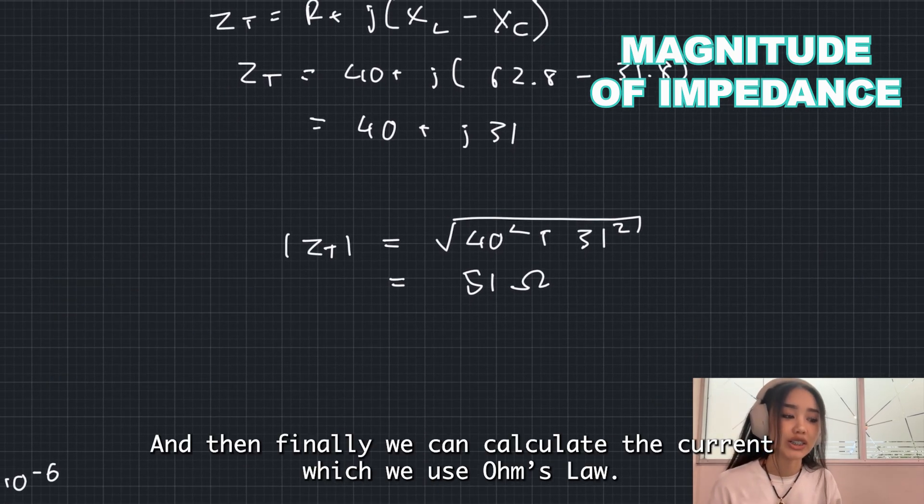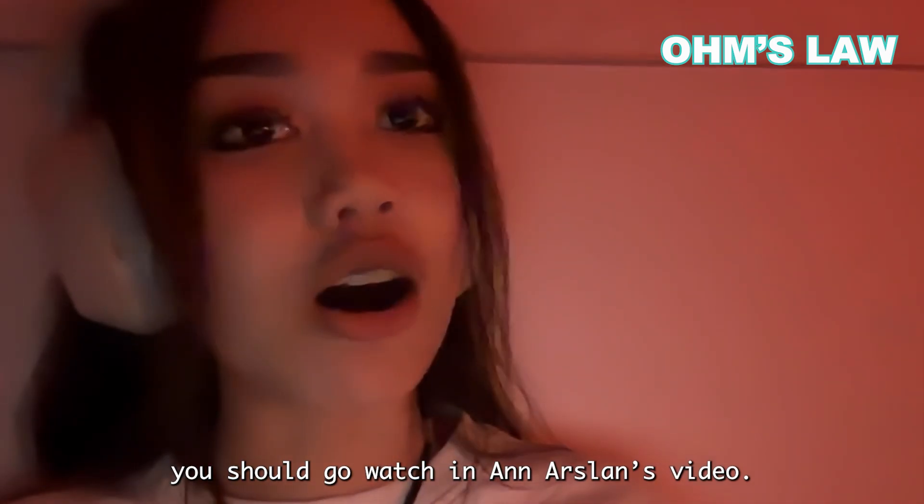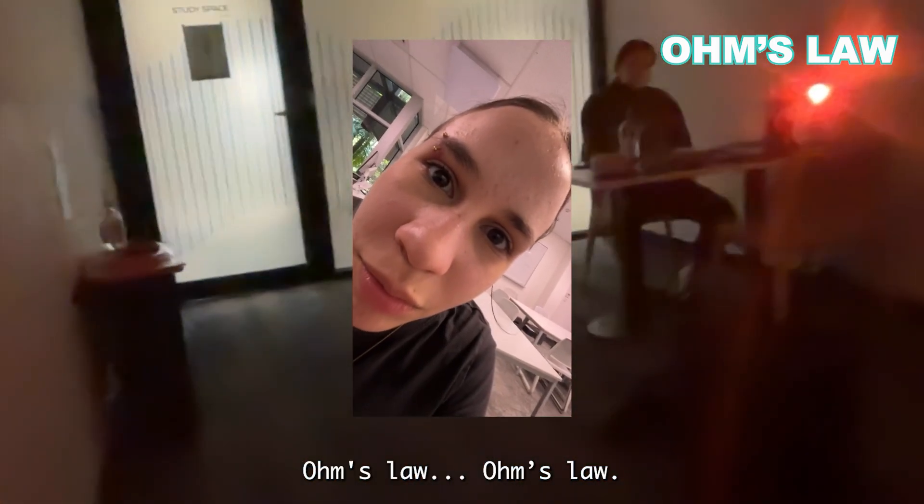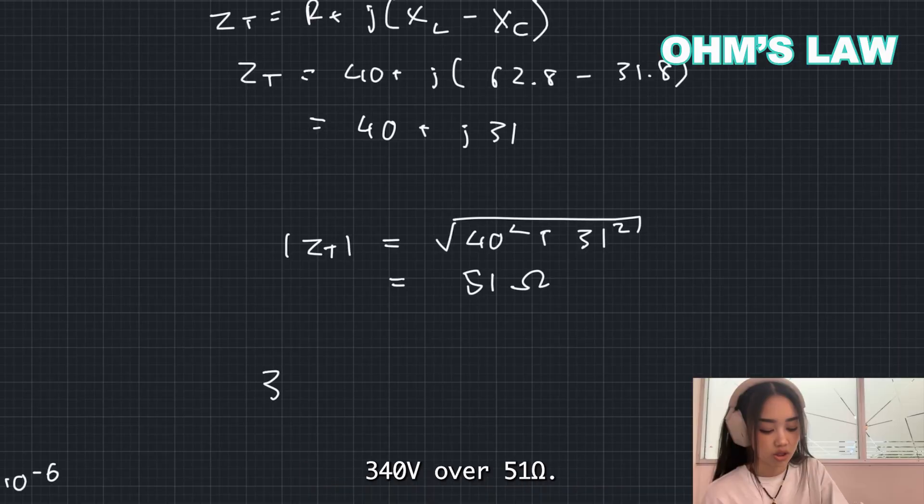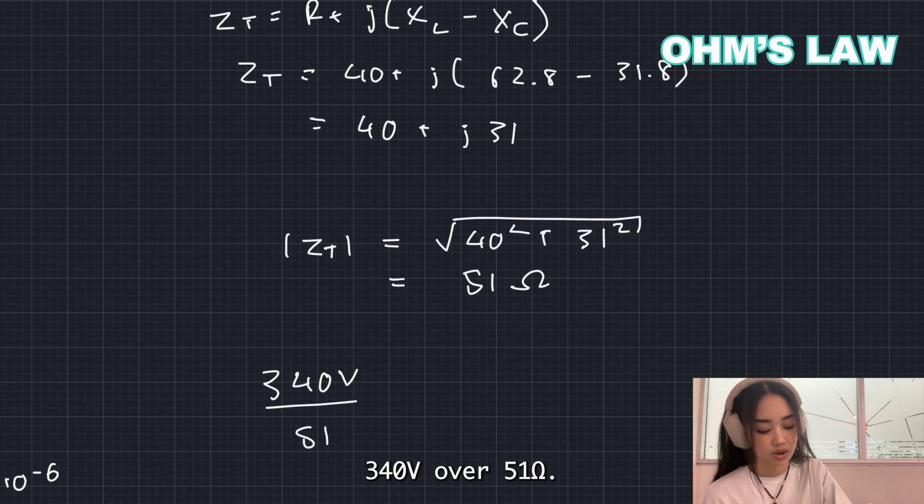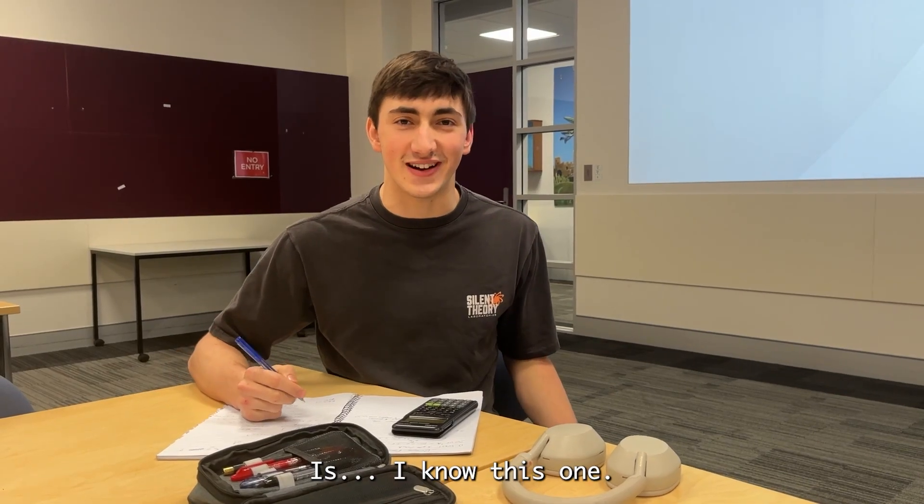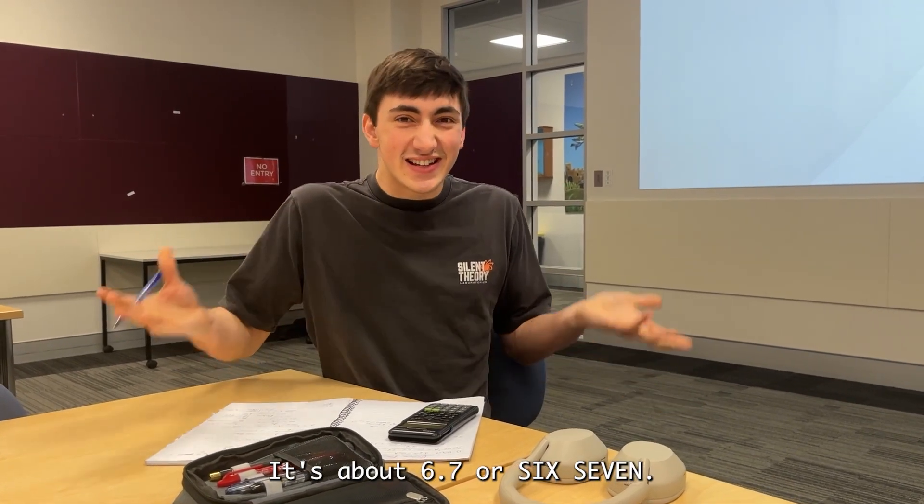And then finally, we can calculate current, which we use Ohm's law. If you don't know Ohm's law, you should go watch Arslan's video. 340 volts over 51 ohms is... I know this one. It's about 6.7 amperes.